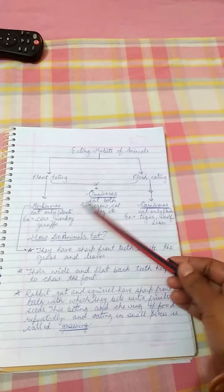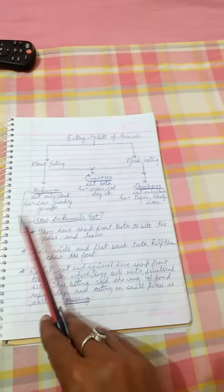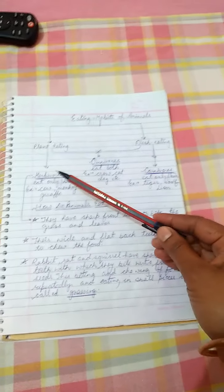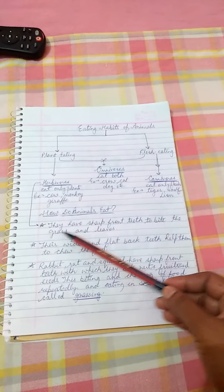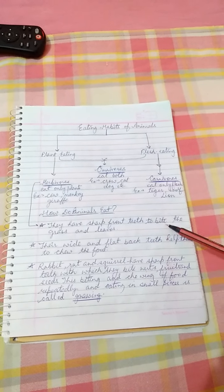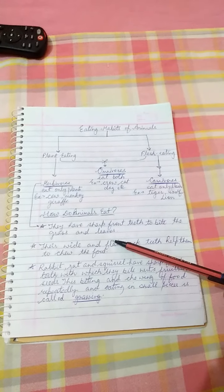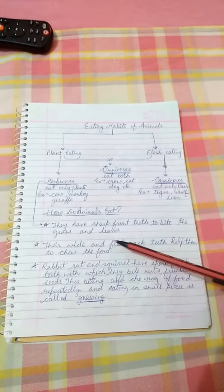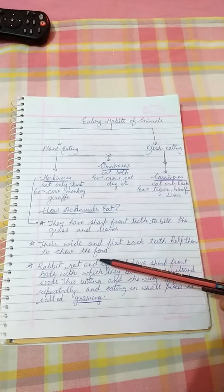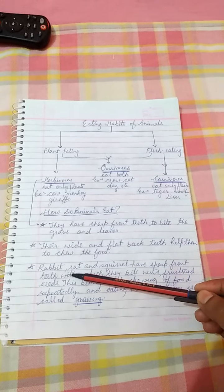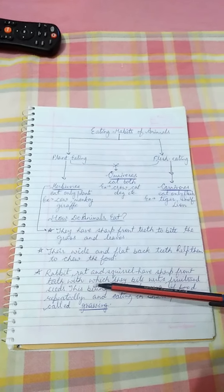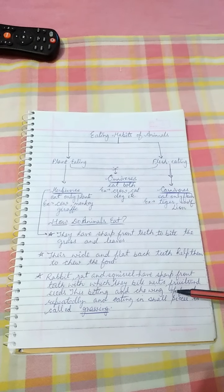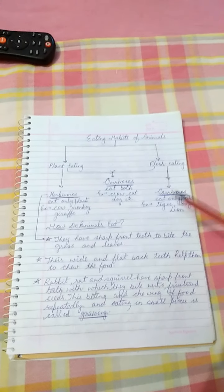Now we will discuss how these animals eat. Firstly, herbivorous animals basically have sharp front teeth to bite the grass and leaves. Their wide and flat back teeth help them to chew the food. Rabbit, rat, and squirrel have sharp front teeth with which they bite nuts, fruits, and seeds.